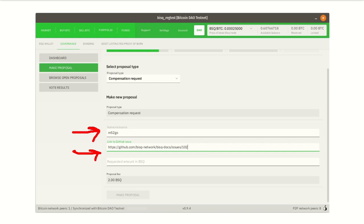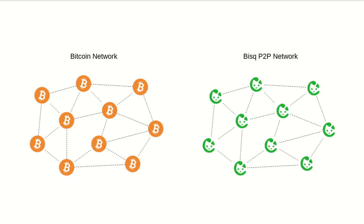It turns out BISC stores this data right in its own peer-to-peer network. So that makes two components to the data model for the BISC DAO: the Bitcoin network, where every DAO action is recorded as a Bitcoin transaction, and the BISC peer-to-peer network, where additional data is stored as necessary.